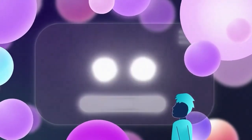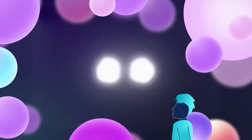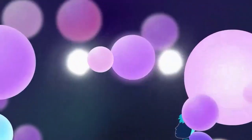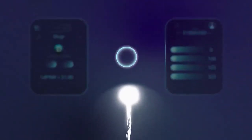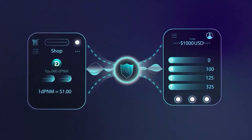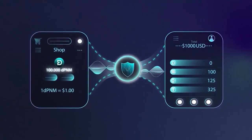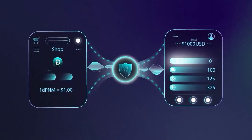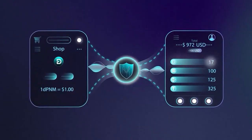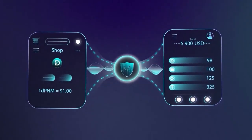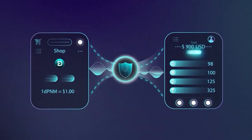This is how the deflationary model starts to work, when there are fewer and fewer coins, but more and more coins are secured. As we see from this example, in the beginning the shop had 100 coins with a value of $100. But due to fees for purchasing coins, some of them have been removed from circulation, and now there are only 98 coins backed with the same $100.